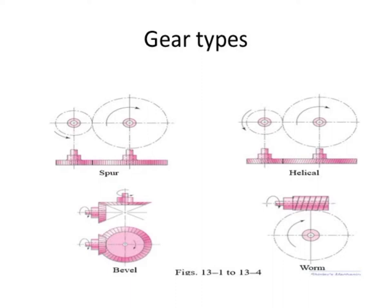Regarding force analysis: if you divide the force exerted by one gear on another into its components, in a spur gear there are two components — radial and tangential. We want the tangential component but not the radial component, so there is one unwanted component. In helical gears there are three components — tangential, axial, and radial — so there are two unwanted components. In that way, spur gear also has its own importance.